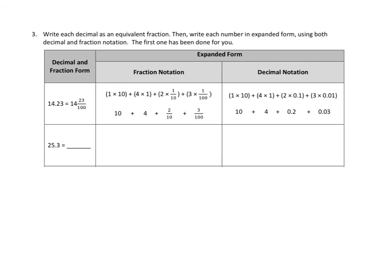Let's see if we can do that one on our own. The next problem gives us 25.3 — that's twenty-five whole units and three tenths. So in fractional form: twenty-five and three tenths. Now let's do that in fractional notation. We have two copies of ten, five copies of one, and three copies of one-tenth. Now let's do that multiplication: two times ten is twenty, plus five times one is five, plus three times one-tenth is three-tenths.